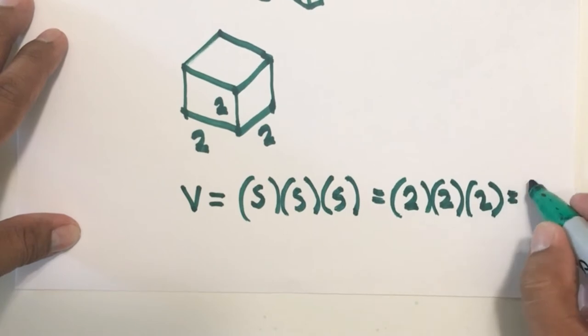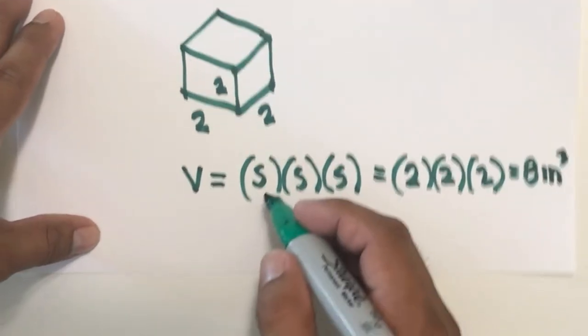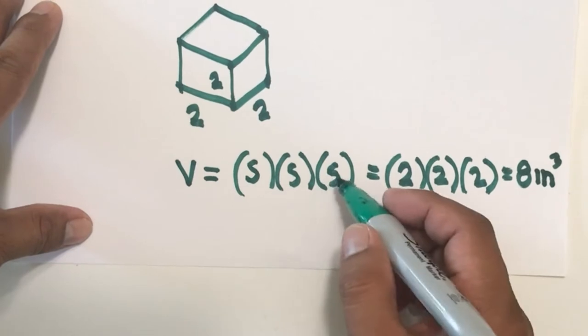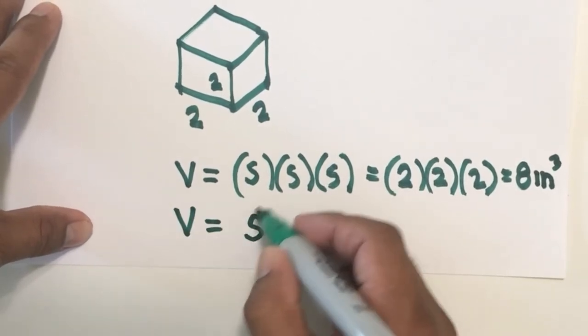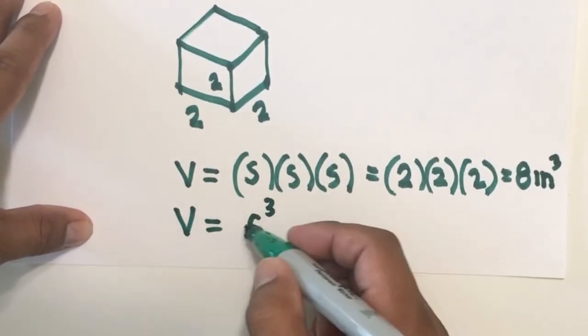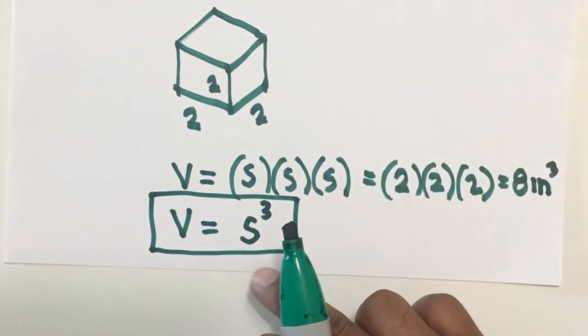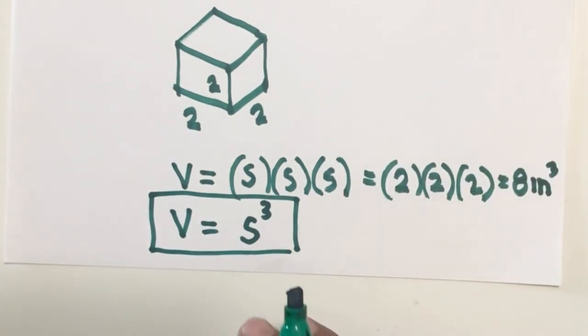And you have 8 inch cube. Another way of writing this side times side is s to the third power, or s cubed. This is now the formula for finding the volume of a cube.